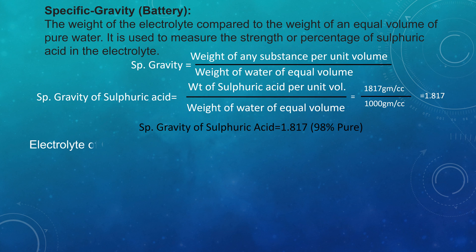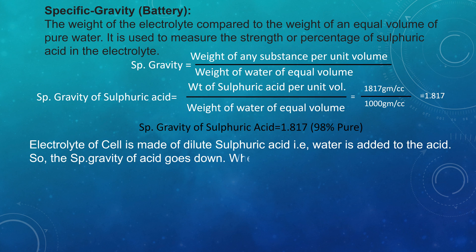Electrolyte of cell is made of dilute sulfuric acid. That is, water is added to the acid. So, the specific gravity of acid goes down.